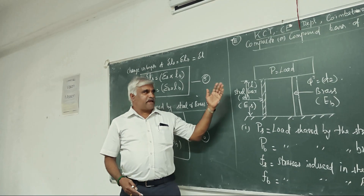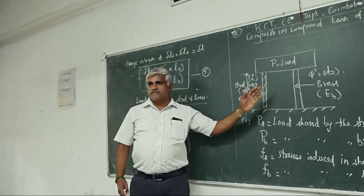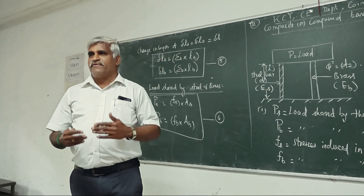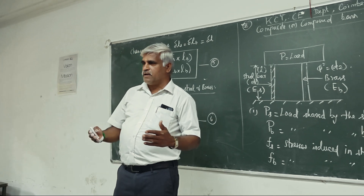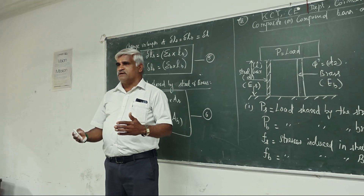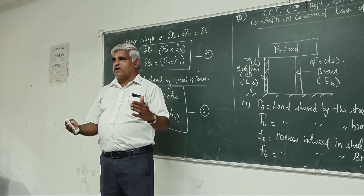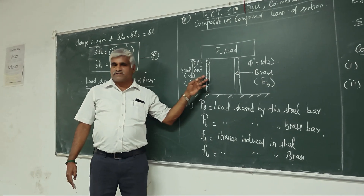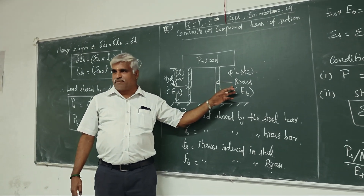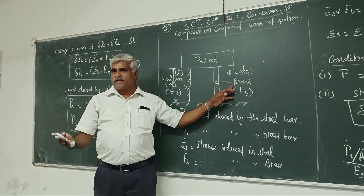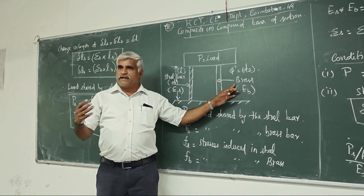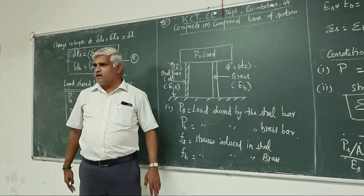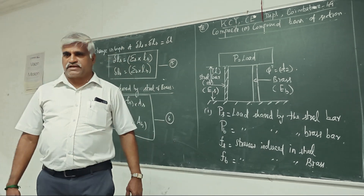In the case of combo bars, they are made up of two or more materials. If the load is applied on a combo bar, the total load will be equal to the load taken by the steel section plus the load taken by the brass material. If there are five materials, you get all the individual loads and then add them to get the total load taken by the composite section.